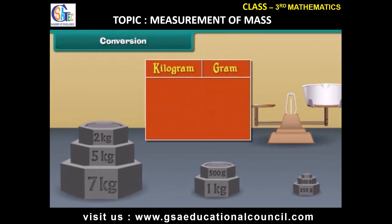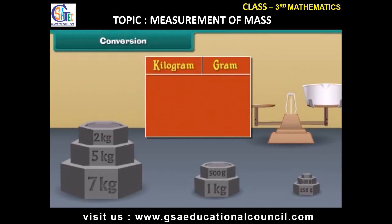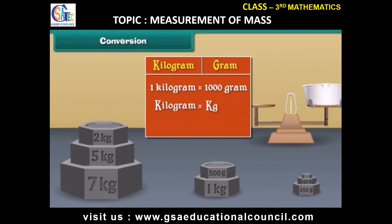The words kilogram and gram are used to express weight. One kilogram is equal to 1000 grams. Kilogram is also represented as kg, and gram is also represented as g.